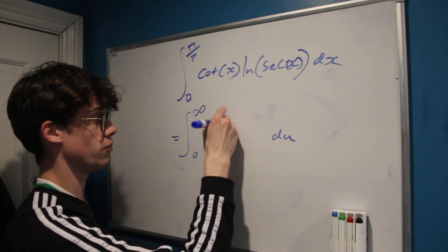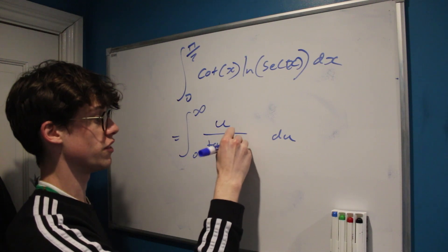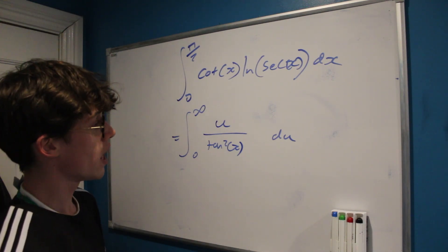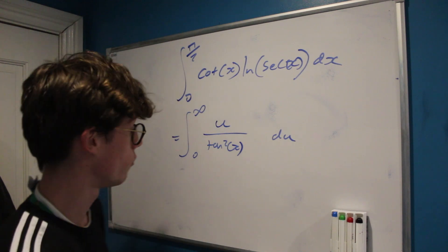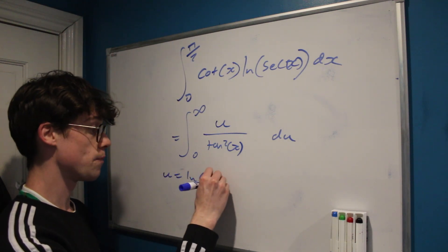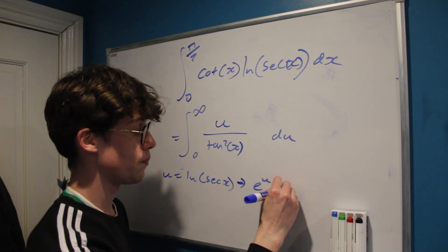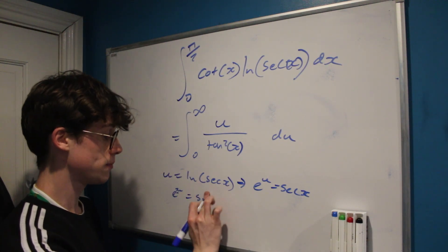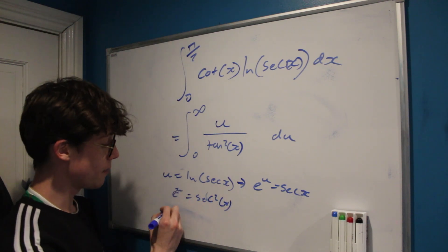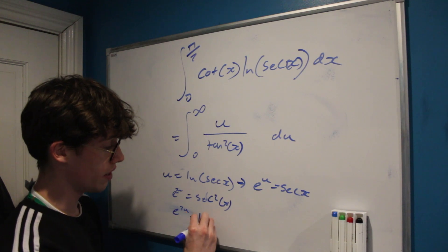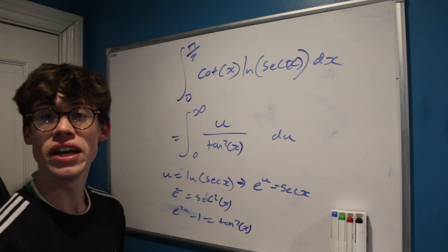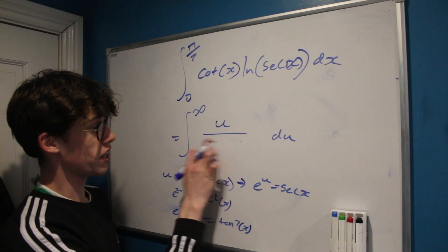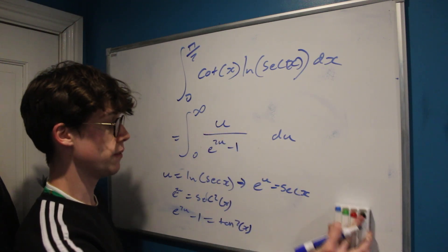This gives our new integral of u/tan²(x). We write it in terms of tan rather than cotangent because our substitution was u = ln(sec x), meaning e^u = sec(x), so e^(2u) = sec²(x). By the trig identity 1 + tan²(x) = sec²(x), it follows that tan²(x) = e^(2u) − 1. So we rewrite the denominator as e^(2u) − 1.